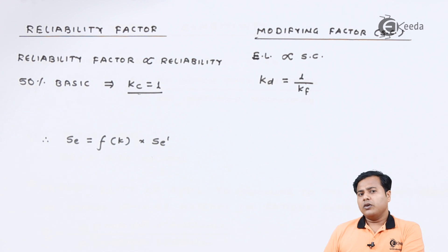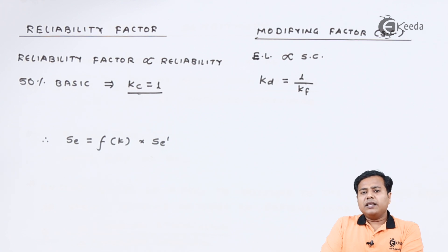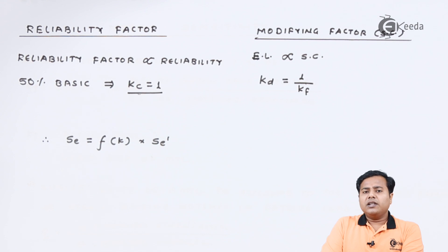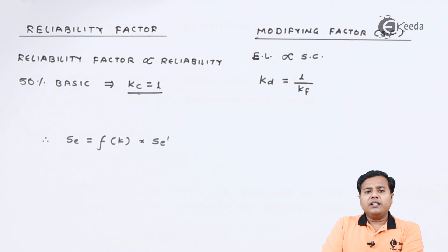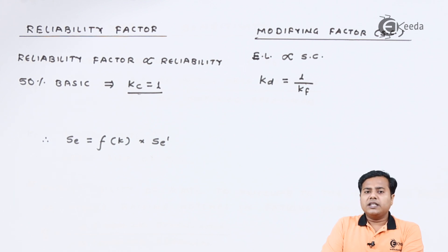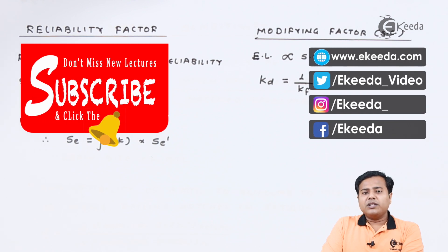To summarize: the ways to estimate the actual endurance limit use an empirical relation stating that the component endurance limit equals the product of factors Ka, Kb, Kc, and Kd multiplied by the specimen endurance limit SE'. These factors account for differences between the estimated and actual values of endurance limit due to fatigue failure, making their consideration very important. In the next section we will look at notch sensitivity and how it affects the design. Thank you so much for watching this video — if you like it please subscribe to Ikeda.